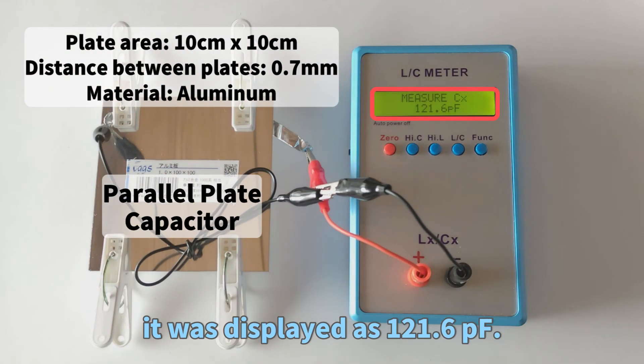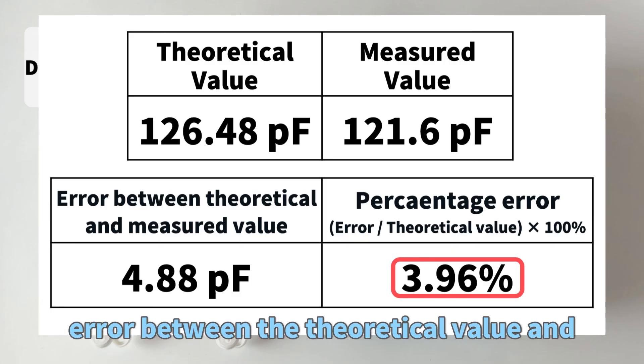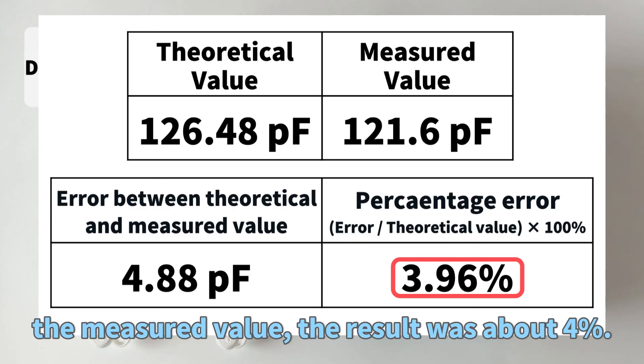Therefore, when we calculated the percentage error between the theoretical value and the measured value, the result was about 4%.